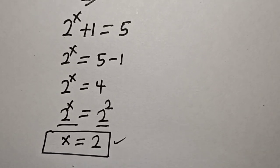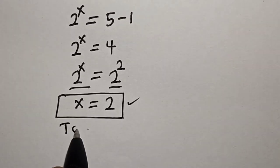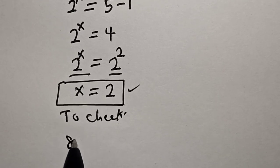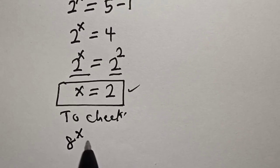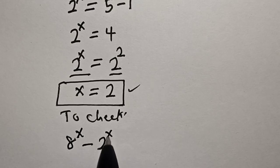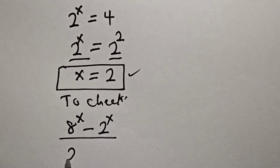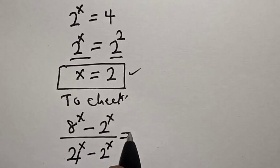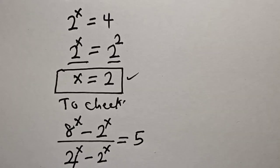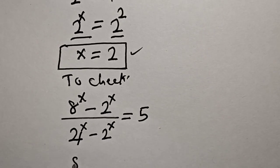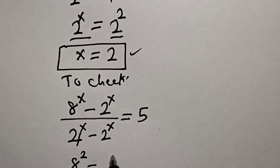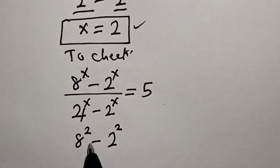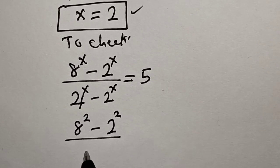We can check to confirm if our answer is right. To check, we substitute x = 2 into the original equation: 8 raised to power 2 minus 2 raised to power 2, divided by 4 raised to power 2 minus 2 raised to power 2, must be equal to 5.